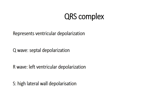The first component of the QRS complex, if present, is the Q wave. The Q wave is typically seen in lateral leads such as leads I, AVL, V4, V5, and V6, and is considered to represent the depolarization of the ventricular septum. The Q wave is a downward (negative) deflection at the start of the complex.